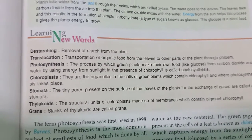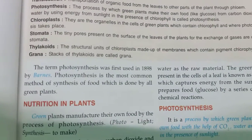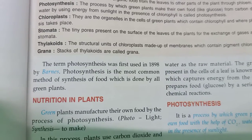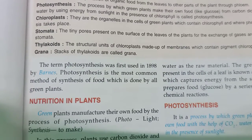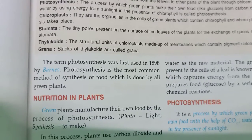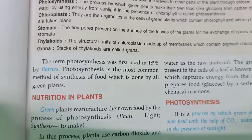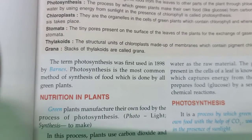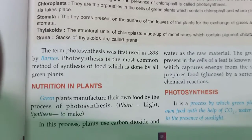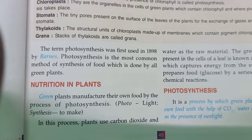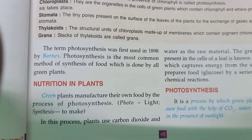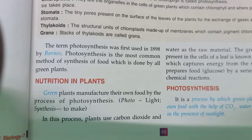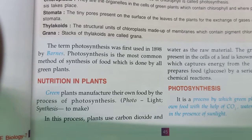Now we start with the chapter. The term photosynthesis was first used in 1898 by Barnes. Photosynthesis is the most common method of synthesis of food, done by all green plants. Nutrition in plants: green plants manufacture their own food by the process of photosynthesis, where photo means light and synthesis means to make or combine.